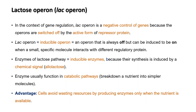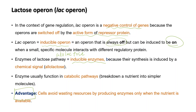In the context of gene regulation, the lac operon is a negative control of genes because the operons are switched off by the active form of the repressor protein. The lac operon is considered an inducible operon because this operon is always off but can be induced to be on when a small specific molecule interacts with the regulatory protein — in this case, allolactose. Enzymes of the lactose pathway are therefore considered inducible enzymes because their synthesis is induced by allolactose. Enzymes like this usually function in catabolic pathways, which involve the breakdown of a nutrient into simpler molecules. The advantage is that cells avoid wasting resources by producing enzymes only when the nutrient is available.